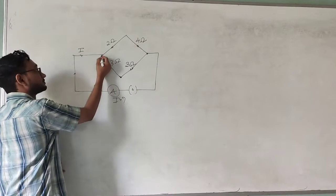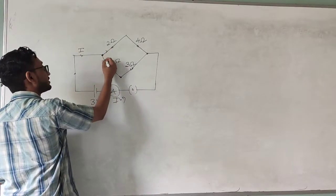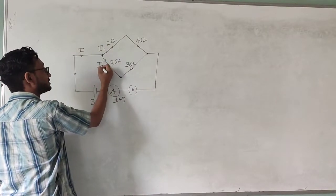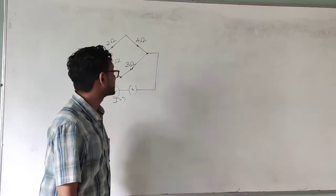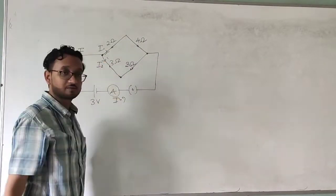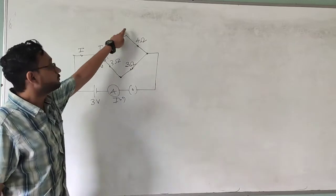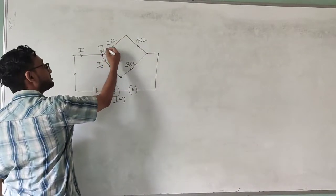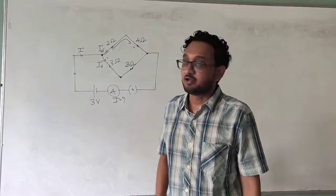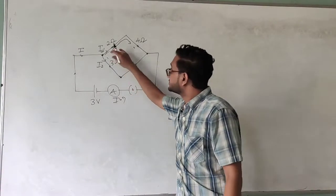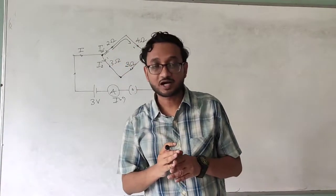As soon as the current reaches this point, it is going to split up into two wires. One current will flow in this way — that will be current I1 — and the other will be current I2. These two wires are in parallel. When current I1 moves around, it passes through the two ohm resistor and then the same current passes through the four ohm resistor as well, which means the two ohm and four ohm resistors are in series.